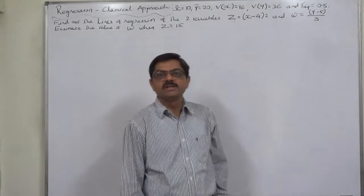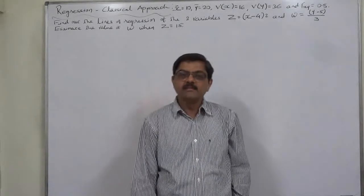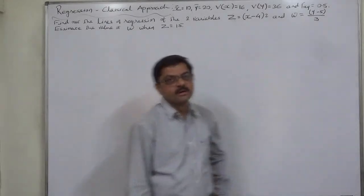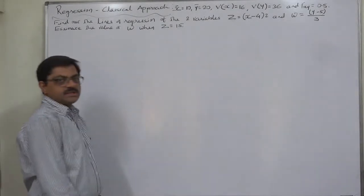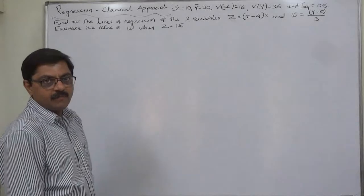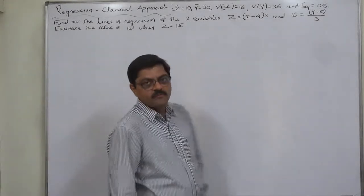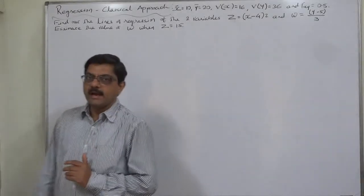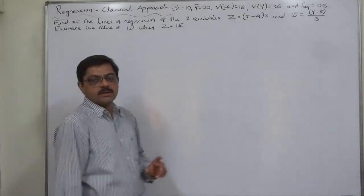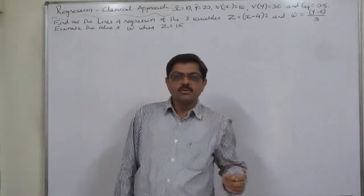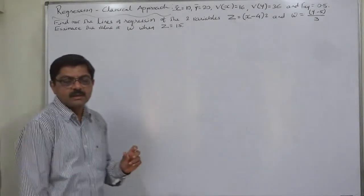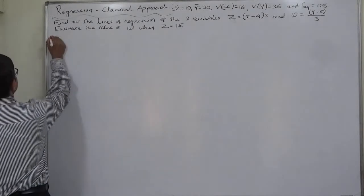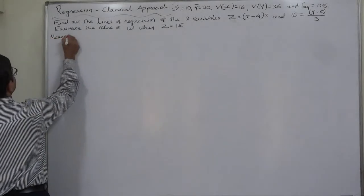Z is the result of change of origin and scale in variable X, and similarly W is the result of change of origin and scale in variable Y. At the time of all calculations, we have to keep in mind the property relevant to change of scale as well as origin.